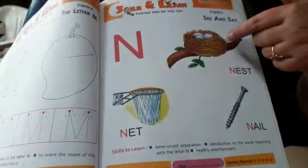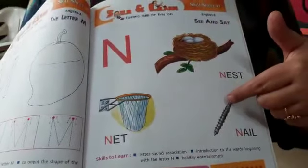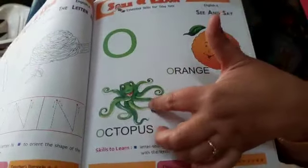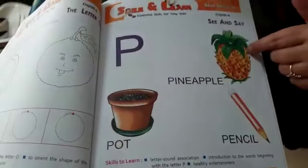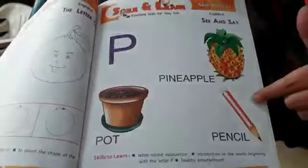N, nest, net, nail. O, orange, octopus, owl. P, pineapple, pot, pencil.